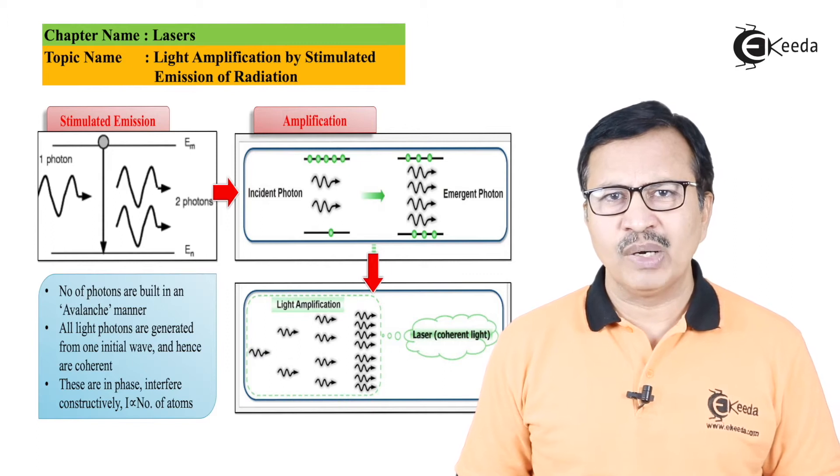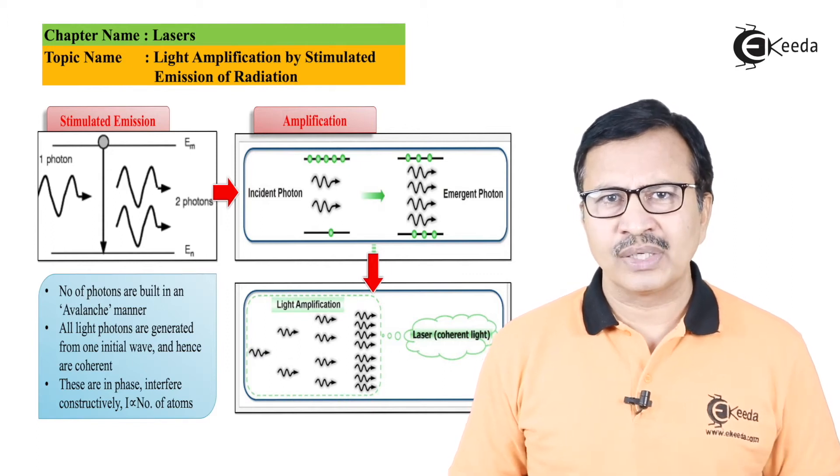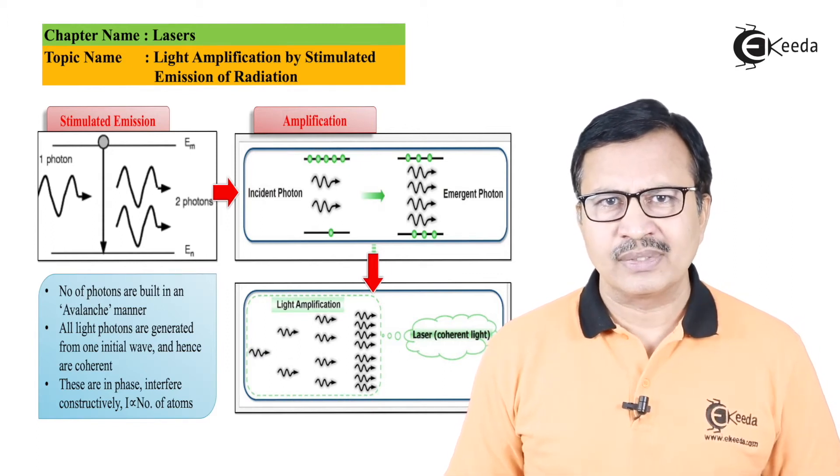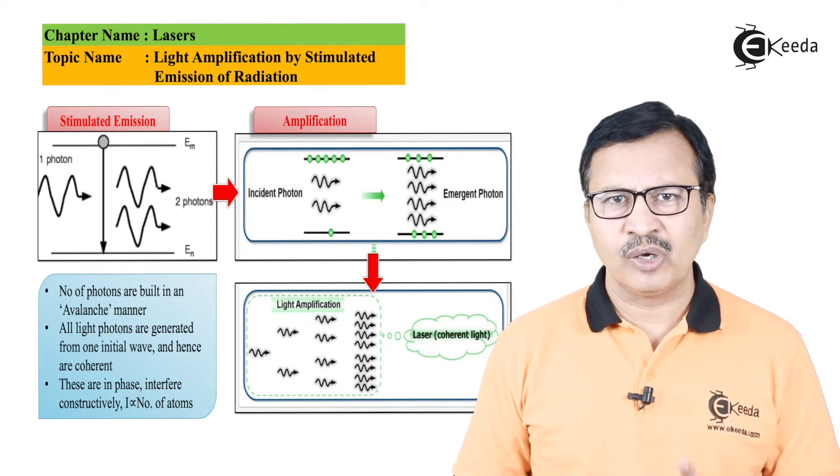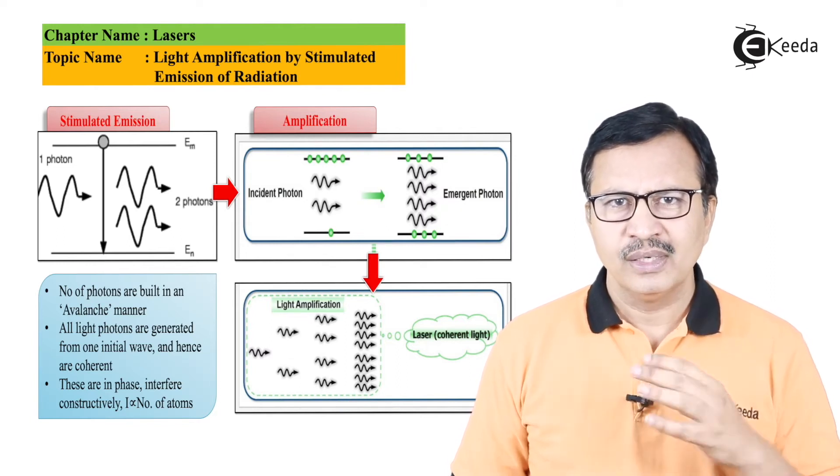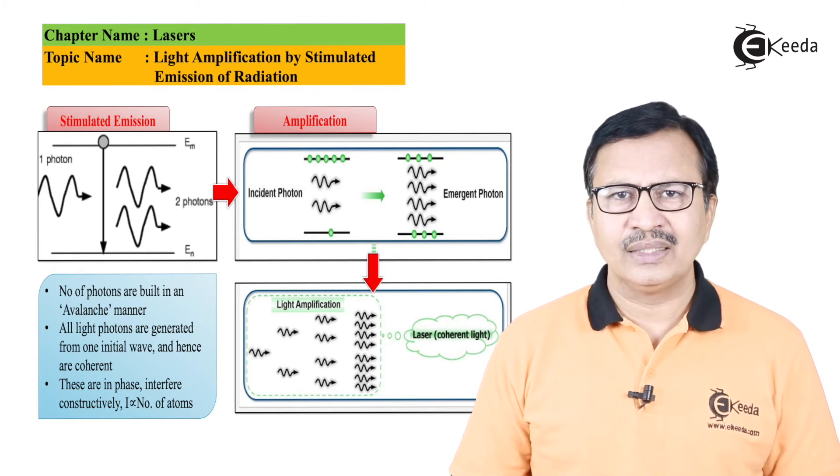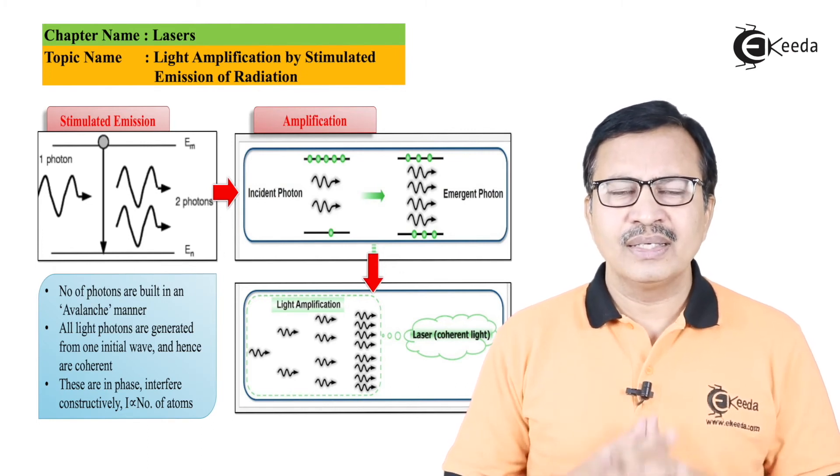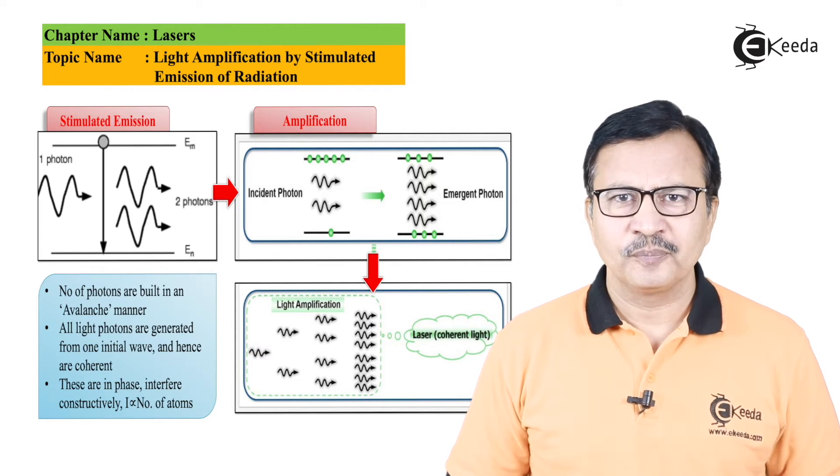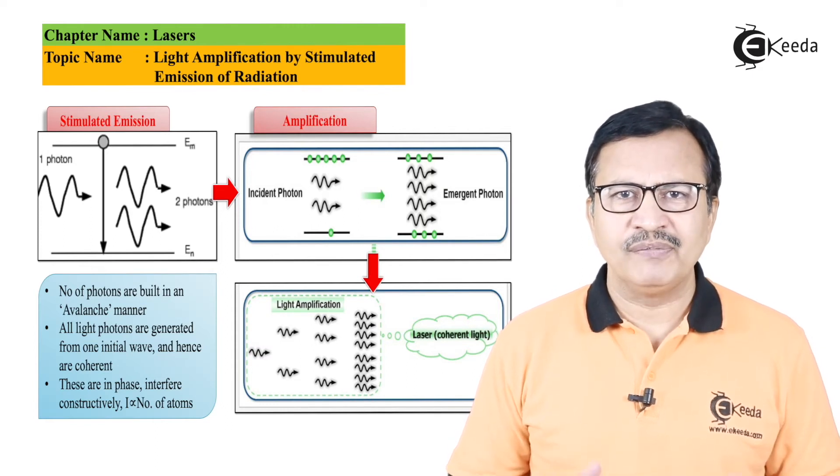These two photons will now bombard two more atoms, or rather will stimulate two more atoms, and this will result in the formation of four photons, and so on and so forth. This entire process will result in an avalanche, or amplification.